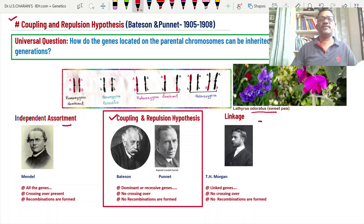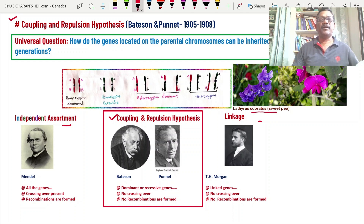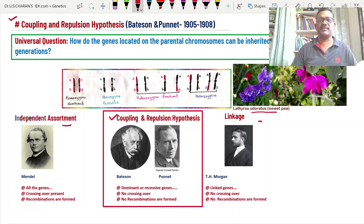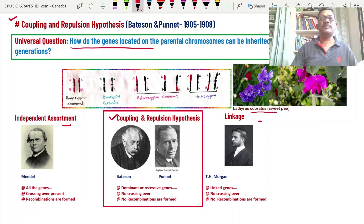In this video, I am focusing on how genes are coupled with each other, how genes repel with each other, what the results of coupling and repulsion processes are, and what the conclusions are. Before starting the main discussion, I would like to compare this coupling and repulsion hypothesis with independent assortment and linkage.